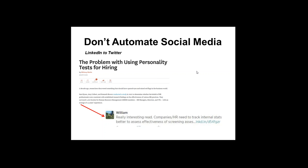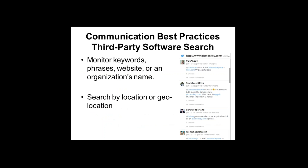Another powerful feature available with third-party applications is the search function — and this is the part of social media that gets lost in the shuffle. Many people view social media only as a way to push out information, but you can also listen to what people are saying about you, your organization, an event you run, or your website. Searching on Twitter or Facebook individually to see what people are saying about you is called social listening.